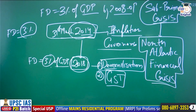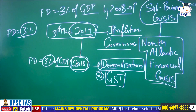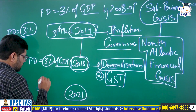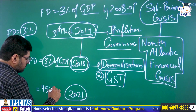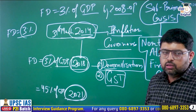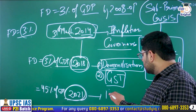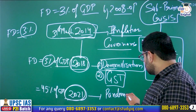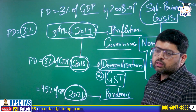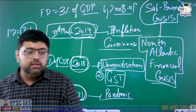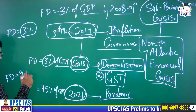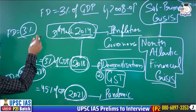For example, during election time or just before an election year, you observe that the government provides many subsidies or comes out with many welfare schemes. This increases government expenditure. But on the other side, receipts are not increased — they are either constant or decreasing. But your expenditure, particularly revenue expenditure, is increasing. So this gap between receipts and expenditure keeps growing.